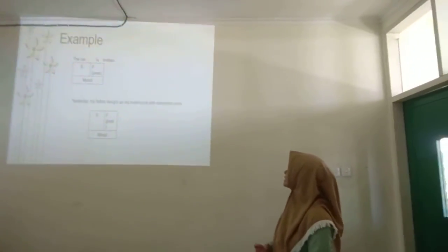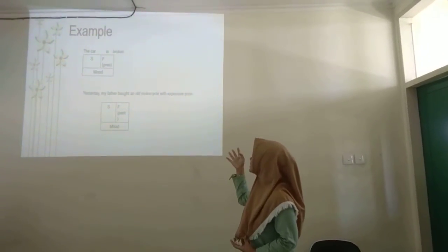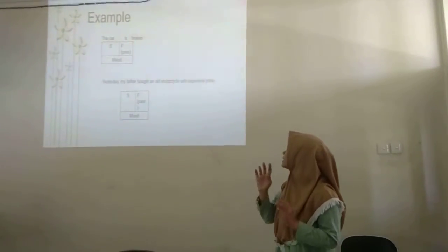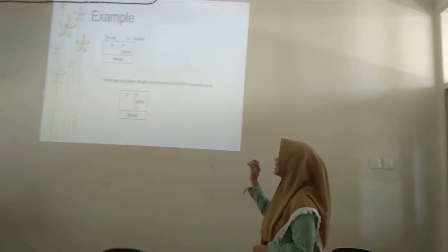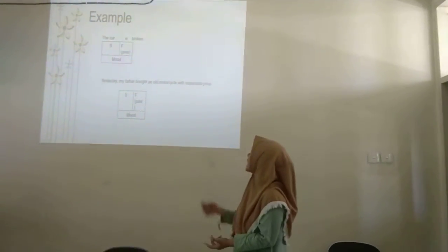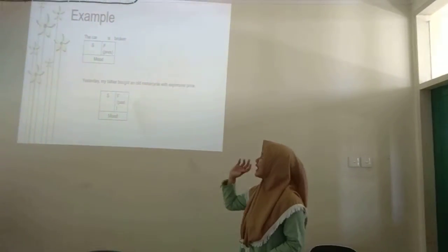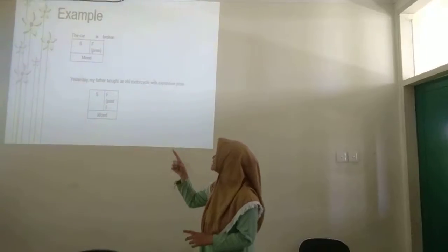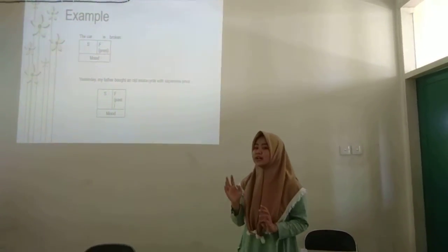So the example of mood in the text, we can see in the screen. The first one is in the class, the card is broken. So we find out the subject first, and finite first. The subject is the card, and the point is the finite temporal present.